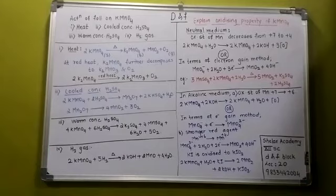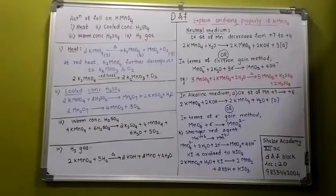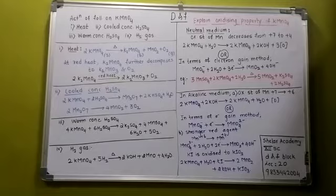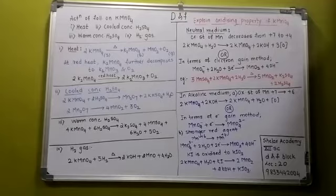The next is explain the oxidizing property in the neutral medium or in the alkaline medium. The acidic medium we will be doing in the next lecture. First is the neutral medium. In neutral medium, the oxidation state of Mn decreases from plus 7 to plus 4.